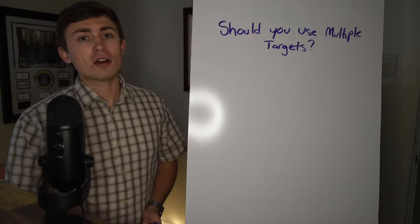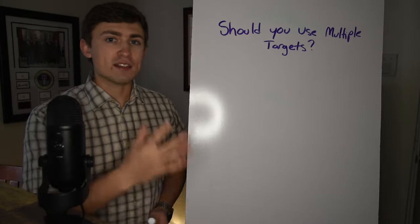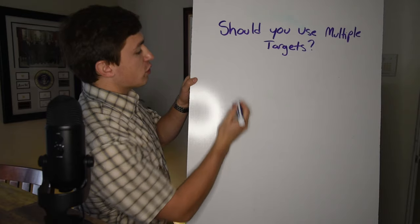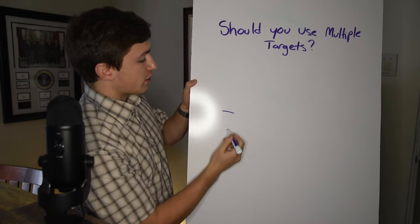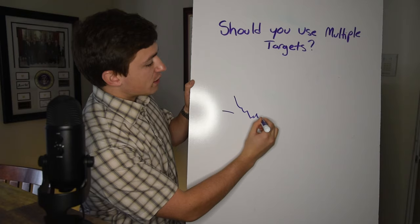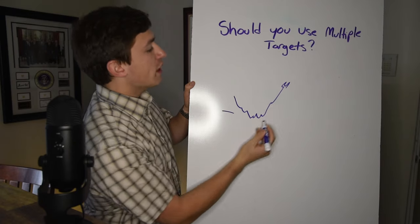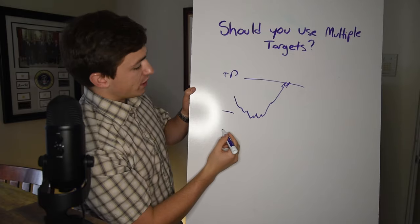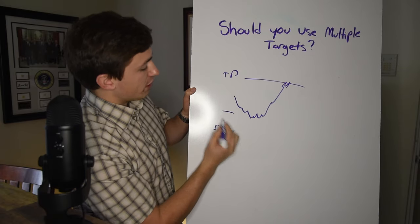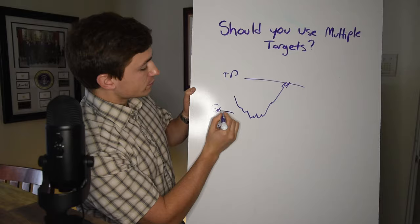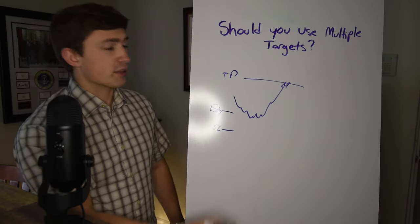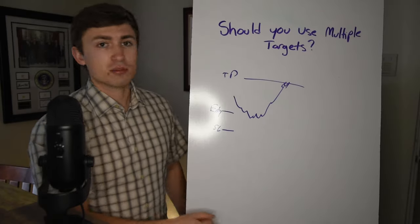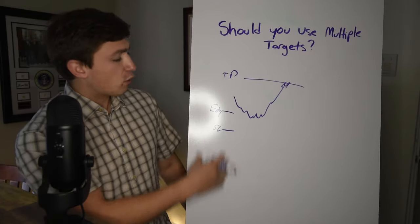So traders often wonder should I just use a single take profit? The example being something like, you know, you have your entry right here. So the market, let's say, comes down to your level. And as price comes in, you're looking to, let's say that you're long. The idea here is that you just take a single take profit and that you have a single stop loss. So you have your entry, you have your stop loss, and you have your take profit. This is kind of the standard of an entry. You have a nice little risk reward. You have one take profit and one stop loss.